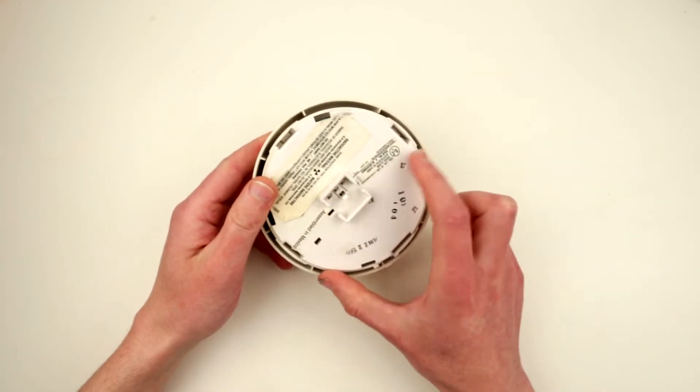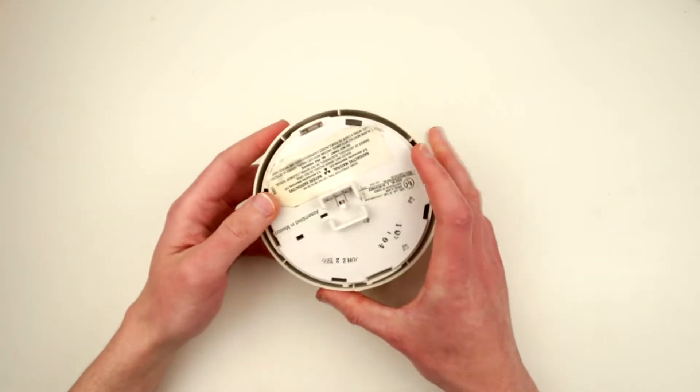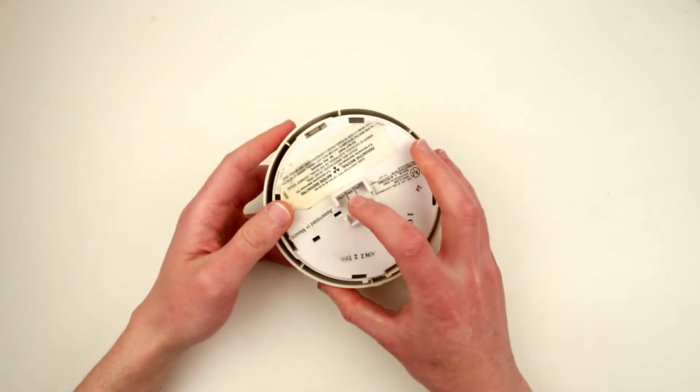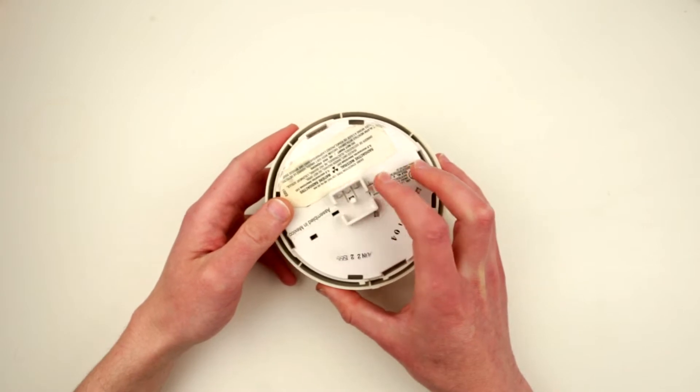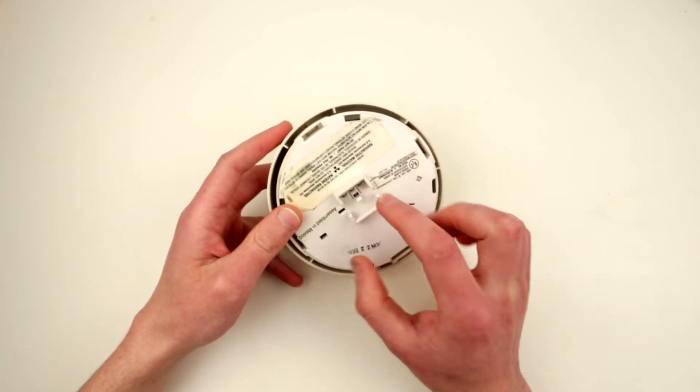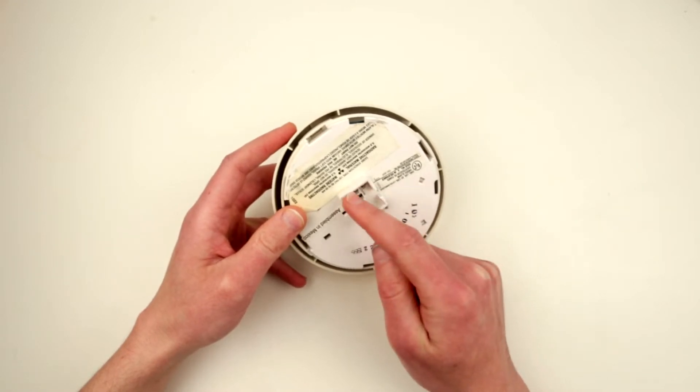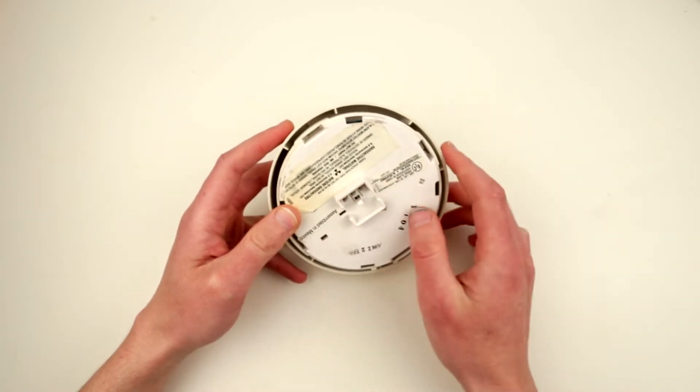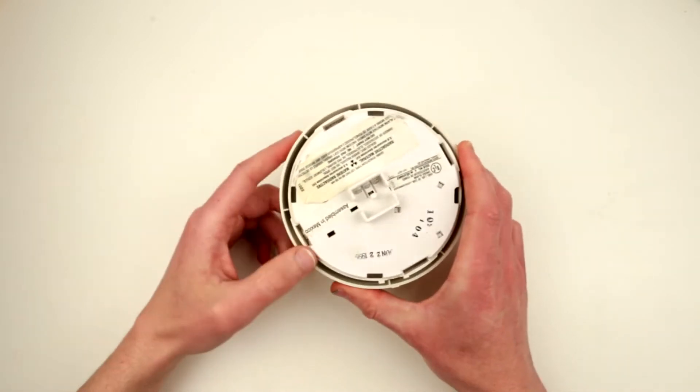As you see, this device, this particular device, is connected by three prongs over here and this is because it uses AC power to get powered. I think one of those contacts is actually connected to other smoke alarms across the house in order to trigger all of them simultaneously, which is kind of cool.